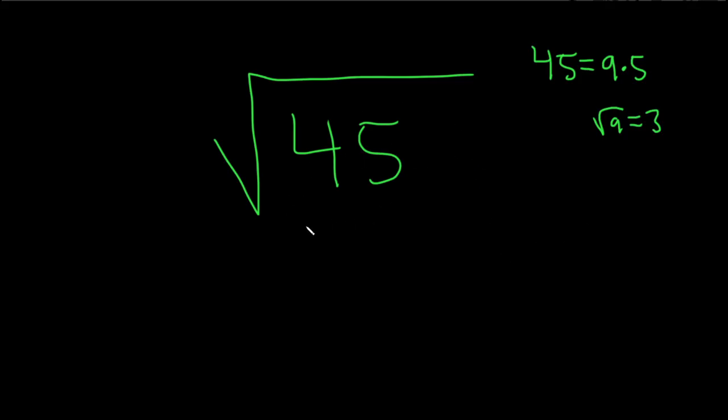So now let's go back over here and fill in 45. Let's replace it with 9 times 5. We'll write down the square root, and then instead of 45 we'll write 9 times 5, just like that.